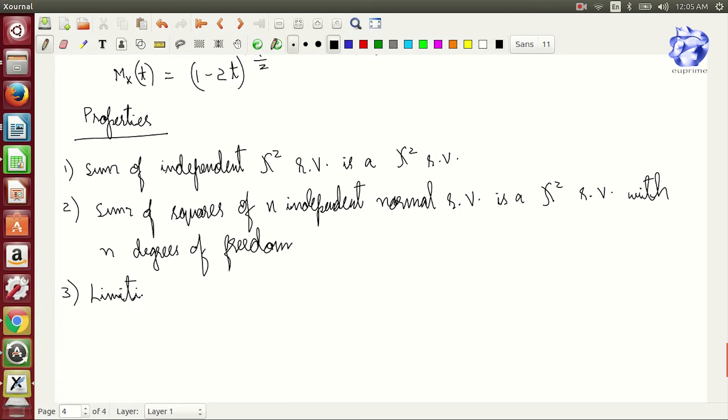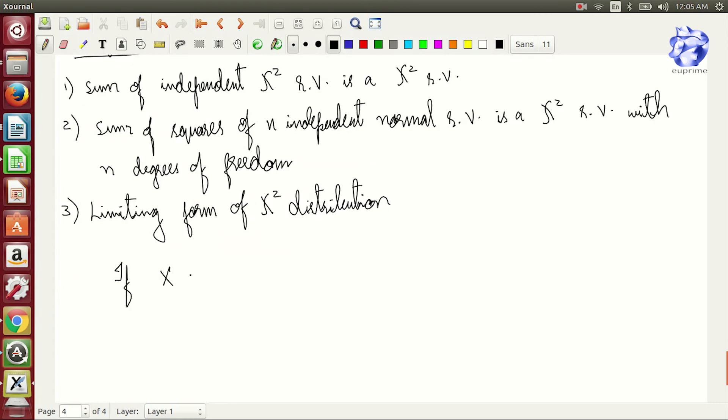Limiting form of chi-square distribution. Its PDF can be given as follows: f of x is equal to e to the power minus x square by 2 x to the power n minus n by 2 minus 1 divided by 2 to the power root n by 2 into root n by 2, where x is in between 0 to infinity.